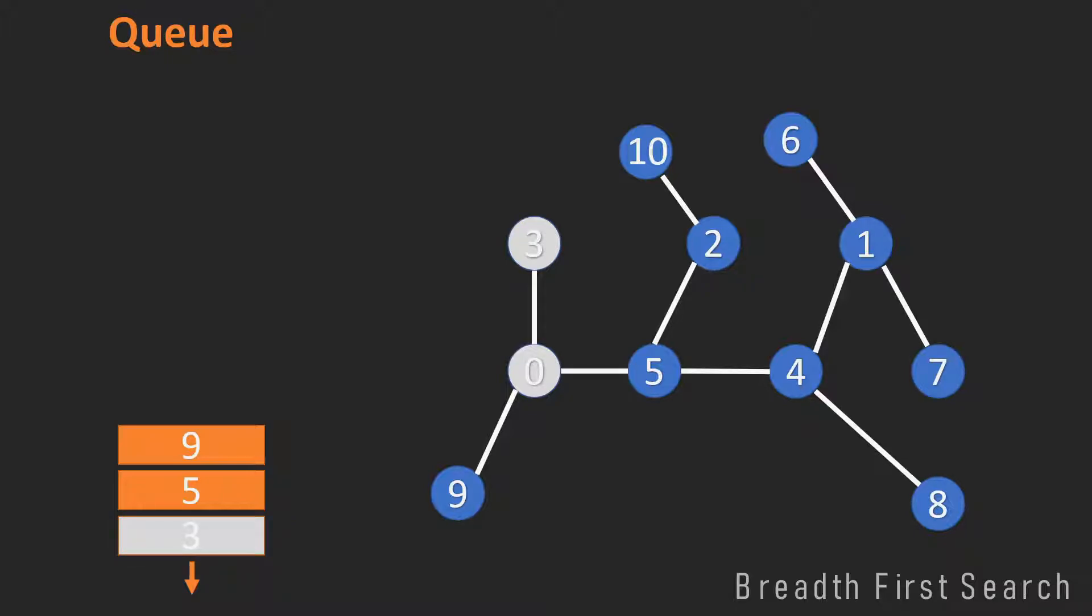Now 5 is our first element in the queue. And we will look at all unvisited neighbors of the 5, and those are the 2 and the 4. And now 2 and 4 are added to the queue. Now the 5 will be marked as visited and will be deleted from the queue.